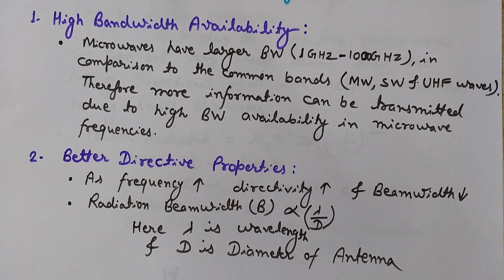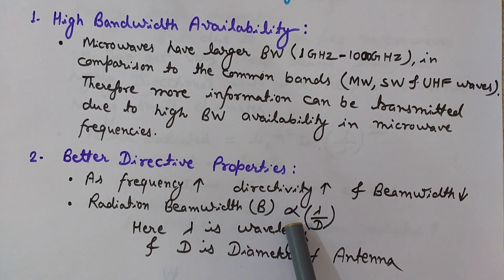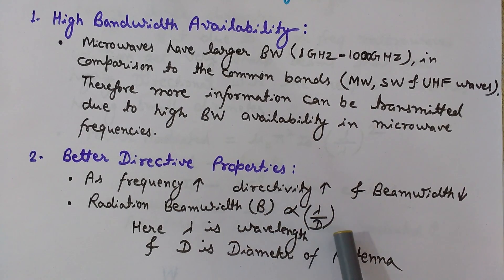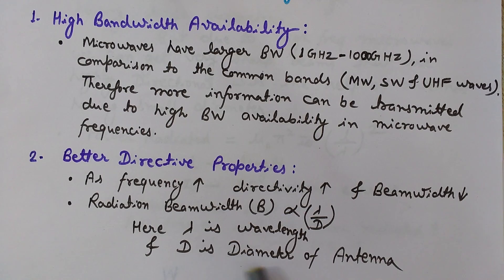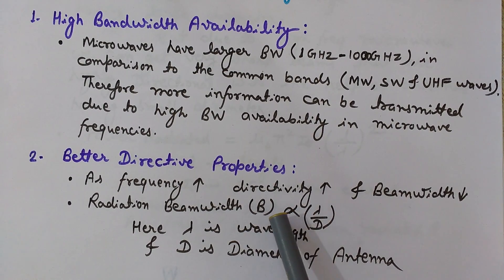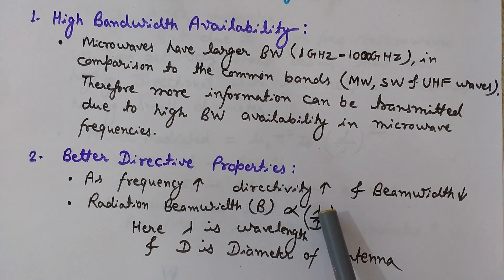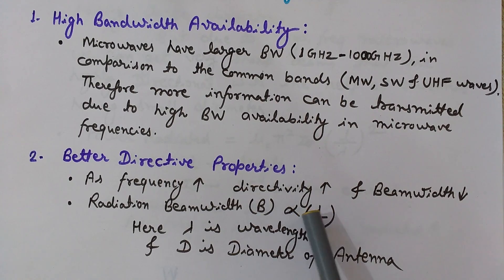The radiation beam width is given by the relation: beam width B is directly proportional to lambda divided by D, where lambda is the wavelength and D is the diameter of the antenna. You can see that beam width is directly proportional to lambda, so as lambda decreases — that is, frequency increases — the beam width also decreases.